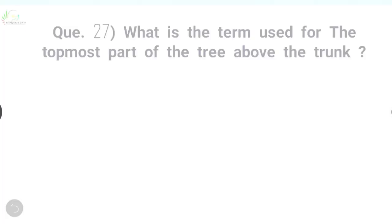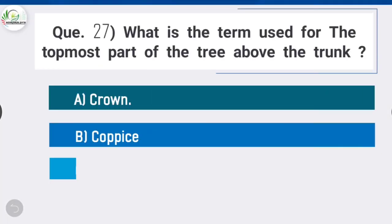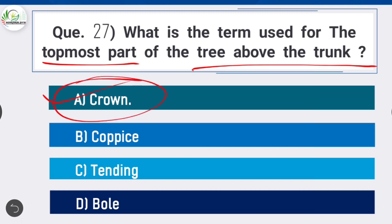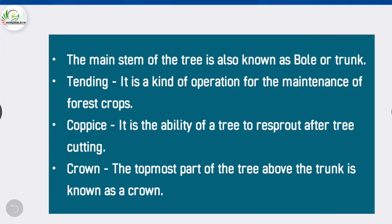Question 27: What is the term used for the topmost part of the tree above the trunk? Option A is correct: crown. The main stem of the tree is also known as bole or trunk. Tending is a kind of operation for the maintenance of forest crops. Coppice is the ability of a tree to re-sprout after cutting. Crown is the topmost part of the tree above the trunk.